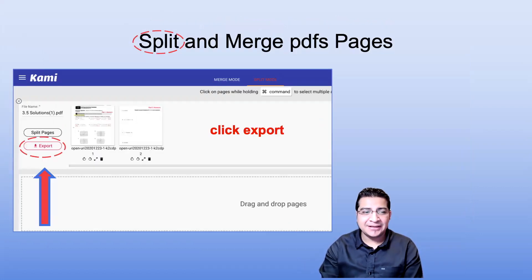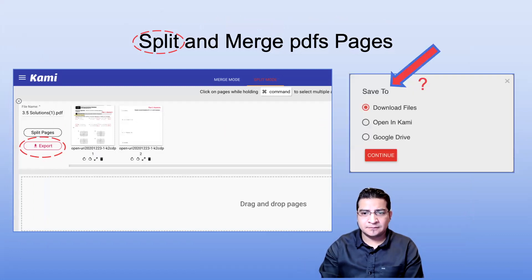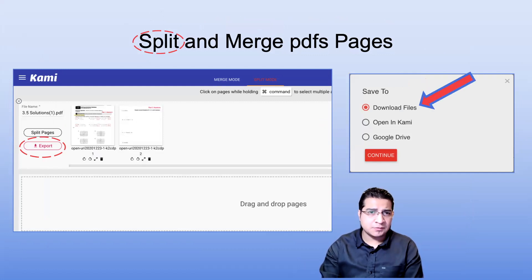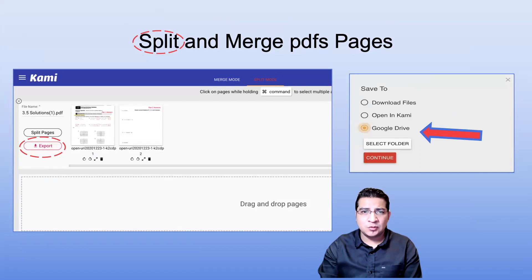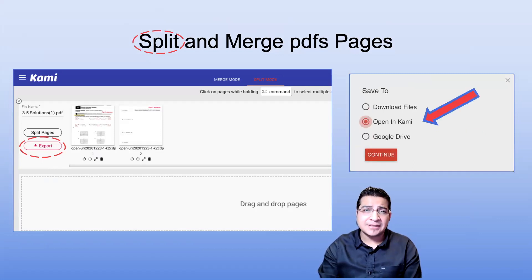That's what we wanted. Now I'm going to hit the export button, and it's going to prompt you to either download the file. Most cases we will download the file. You can also open it in Kami again and you can also save it to your Google Drive. In my case, I'm going to open it with Kami.